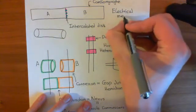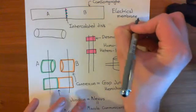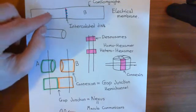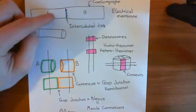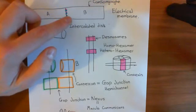When cardiomyocyte A undergoes an action potential, what these gap junctions are going to allow is they're going to allow the action potential in cardiomyocyte A to induce an action potential in cardiomyocyte B.